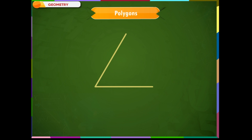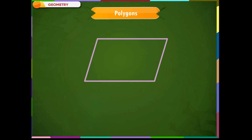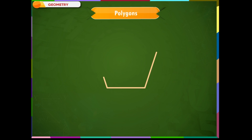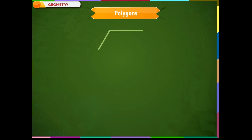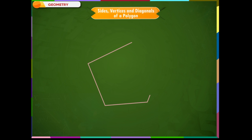Different polygons are named according to their number of sides. A polygon with three sides is called a triangle. A polygon with four sides is called a quadrilateral. A polygon with five sides is called a pentagon. A polygon with six sides is called a hexagon. Polygons are shapes with boundaries made of straight lines, and they have sides, vertices, and diagonals.